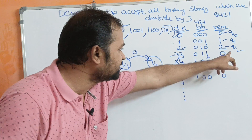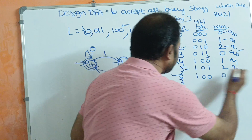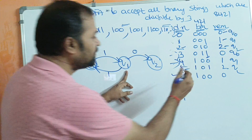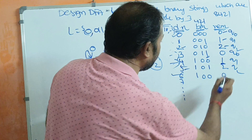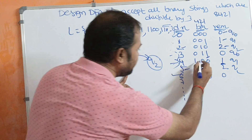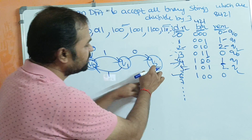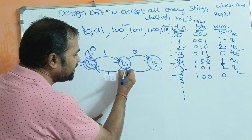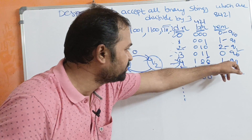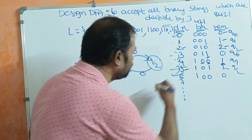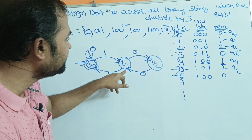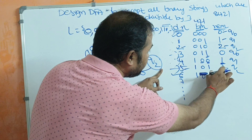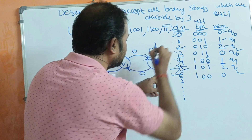For decimal 4, binary 100: Q0 on 1 moves to Q1; Q1 on 0 moves to Q2; and we need to reach Q1 (since 4 mod 3 = 1). So Q2 on 0 moves to state Q1. For decimal 5, binary 101: Q0 on 1 goes to Q1; Q1 on 0 goes to Q2; and we need to stay at remainder 2, so Q2 on 1 stays at Q2.